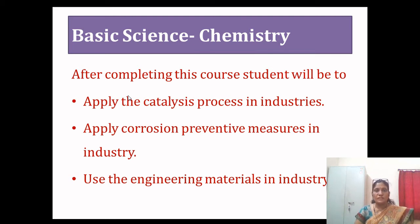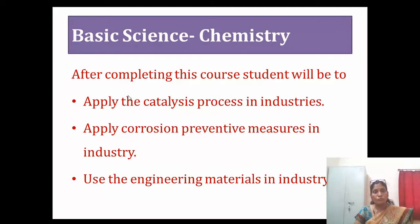Welcome to the course Basic Science Chemistry. This course is developed for diploma engineering students to develop the competence to solve various broad-based engineering problems. After completing this course, learners will be able to apply catalysis processes in industries, apply corrosion preventive measures in various industries, and use engineering materials in industry. These are the course outcomes developed after completing this chapter.